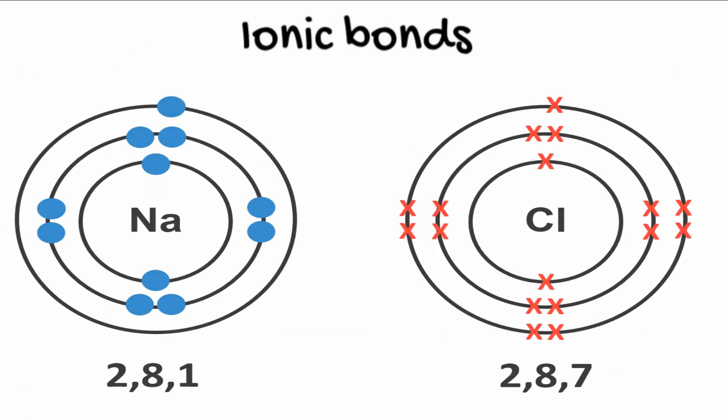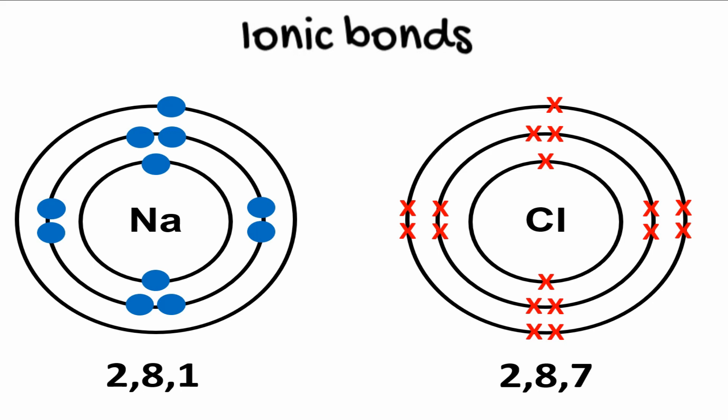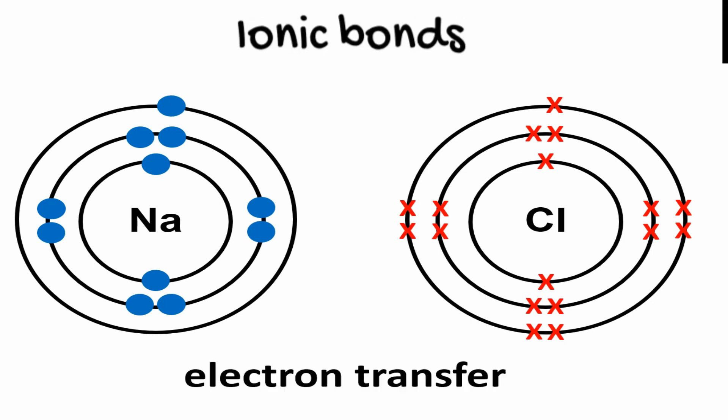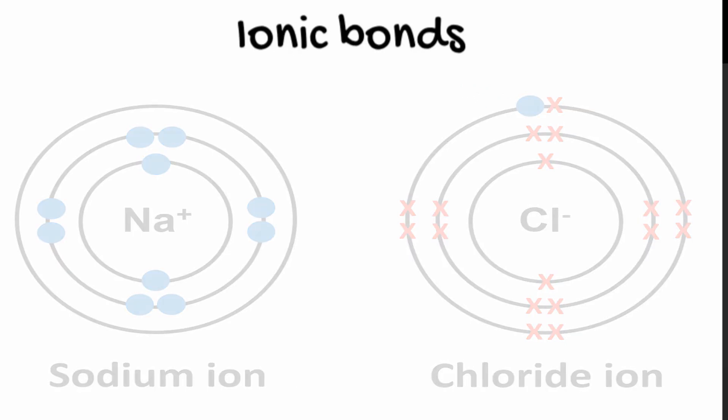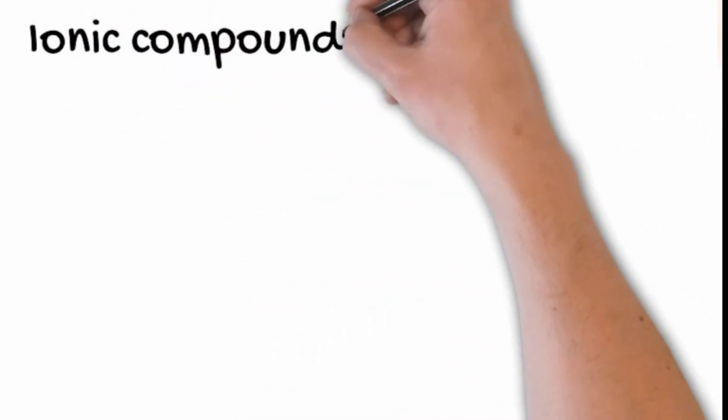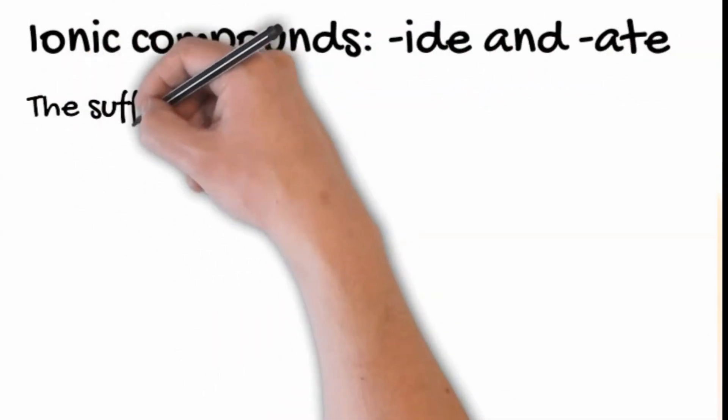Here is a dot and cross diagram for sodium and chlorine showing all the electrons in all the shells. A single electron transfers from the sodium to the chlorine, forming two ions.